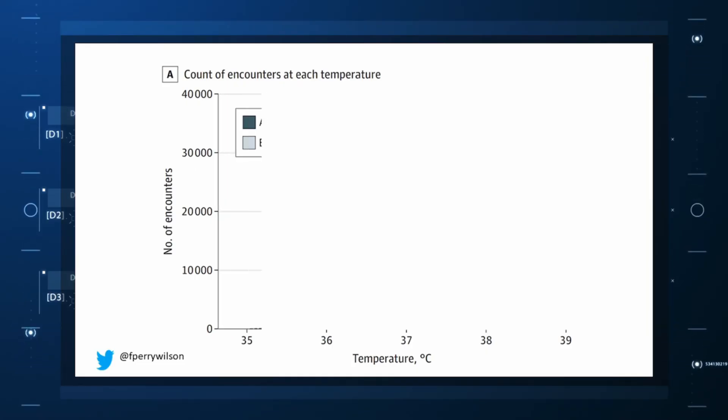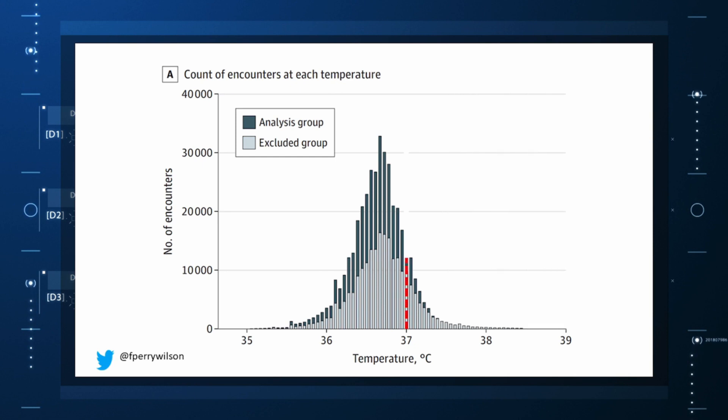They excluded those under 20 or above 80 years and those with extremes of height, weight, or BMI. You end up getting a distribution like this. Note that the peak is clearly lower than 37 degrees Celsius.